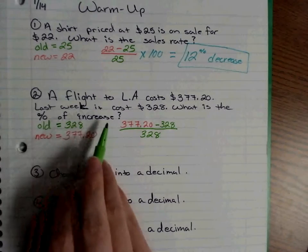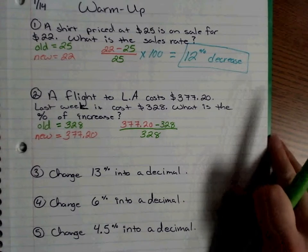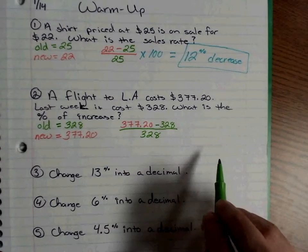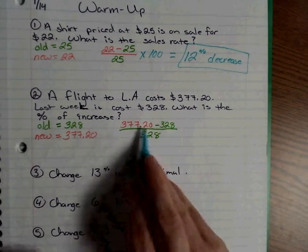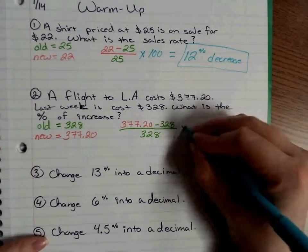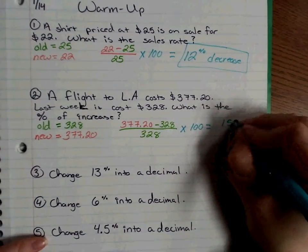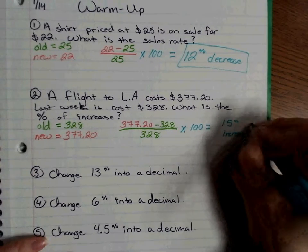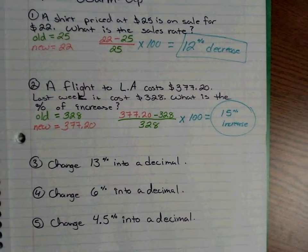A hint also should have been that it was supposed to be a percent of increase, which meant you were supposed to get a positive when you did your subtraction. Those of you who subtracted and got a negative set it up wrong. So subtract, divide by 328, then multiply by 100 — you get a 15% increase.